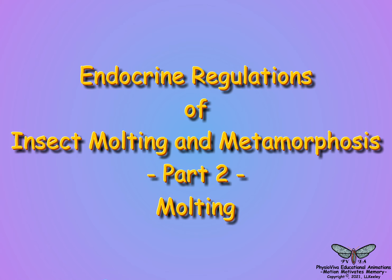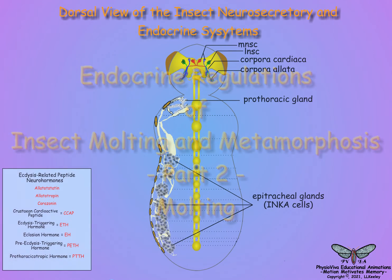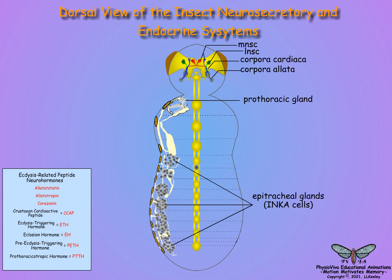This scene will describe the hormones that regulate insect molting and their tissue sources. Here we see a dorsal view of the organization of the insect neurosecretory and glandular endocrine systems, illustrating the interactions of the two systems relative to their roles in regulating molting.